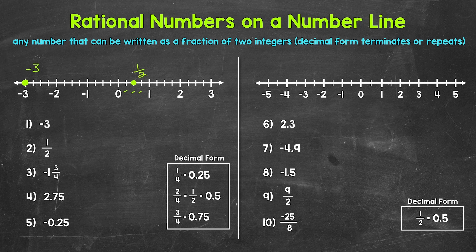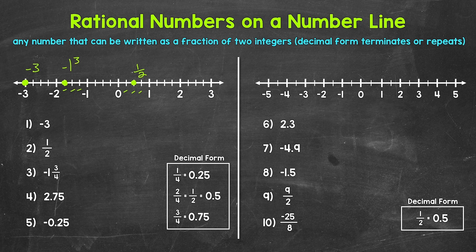Moving on to number three, we have negative one and three fourths. We need to look between negative one and negative two, to the left of zero. Between negative one and negative two, we have negative one and one fourth, negative one and two fourths (negative one and a half), and then negative one and three fourths — right here.